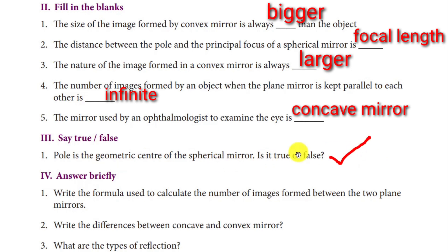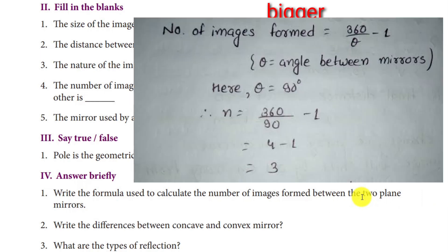The size of the image formed by a convex mirror is always smaller than the object. The distance between the pole and the principal focus is the focal length. The number of images formed when two plane mirrors are kept parallel to each other is infinite. The mirror used by an ophthalmologist to examine the eye is a concave mirror. True or false: The pole is the geometric center of the spherical mirror — True.